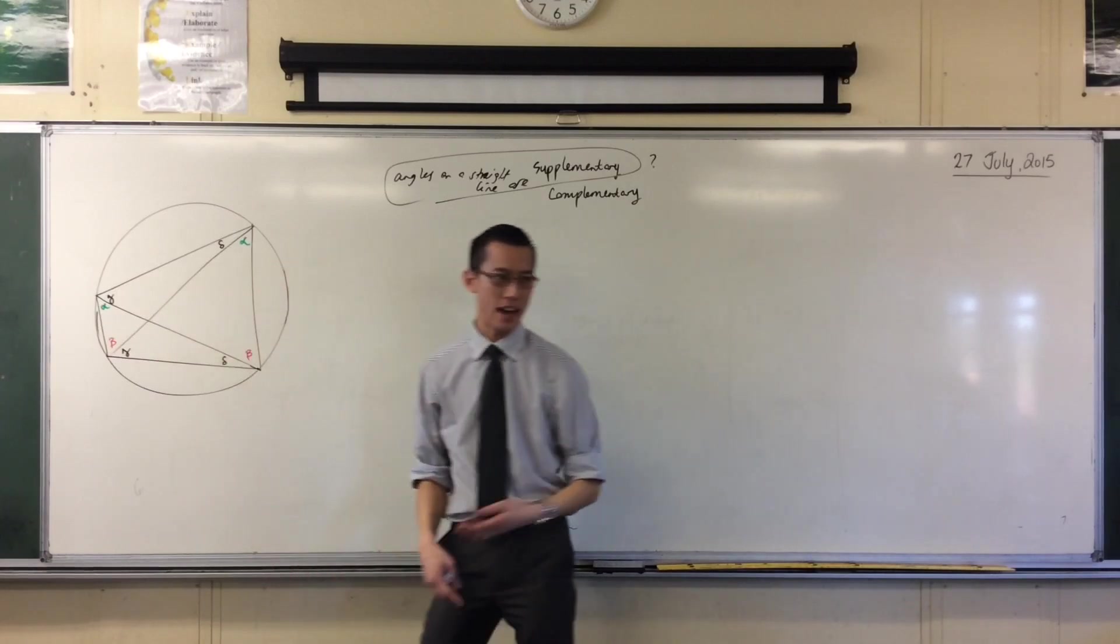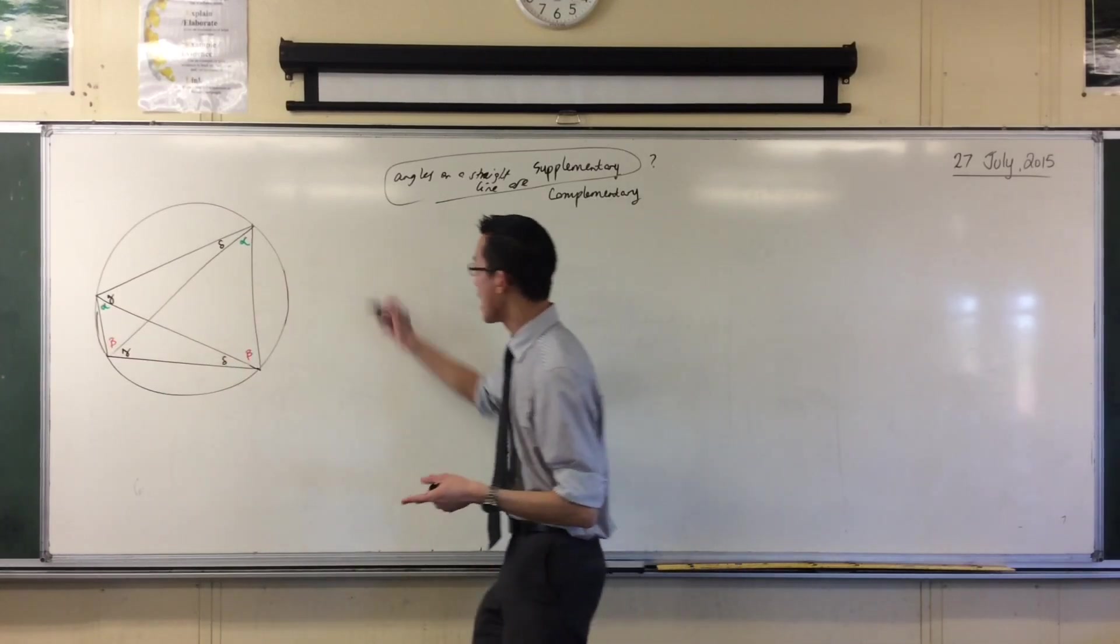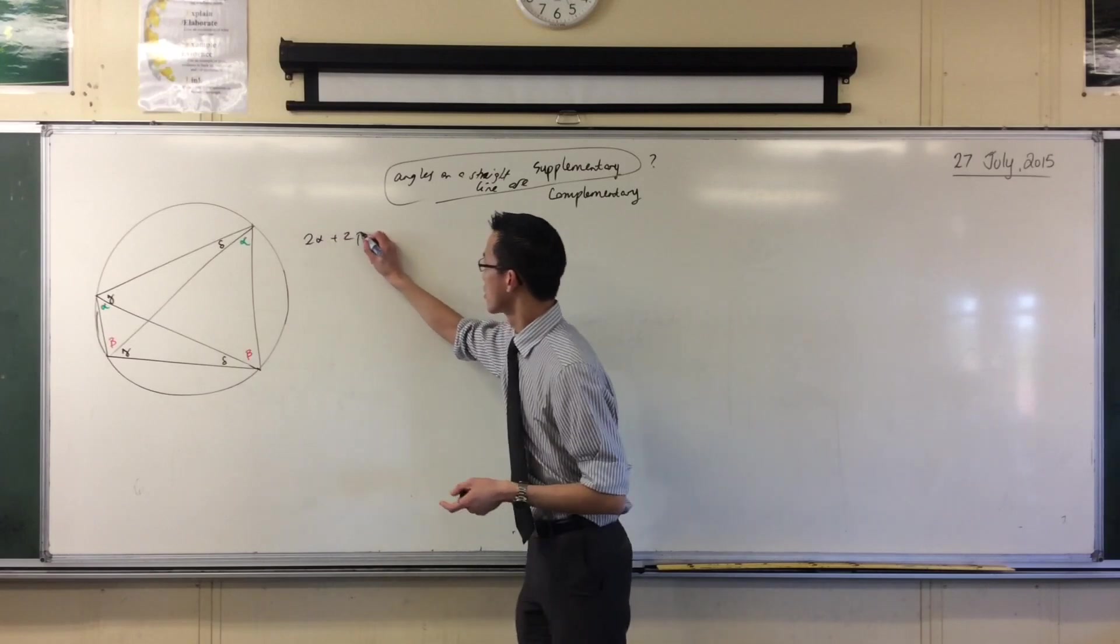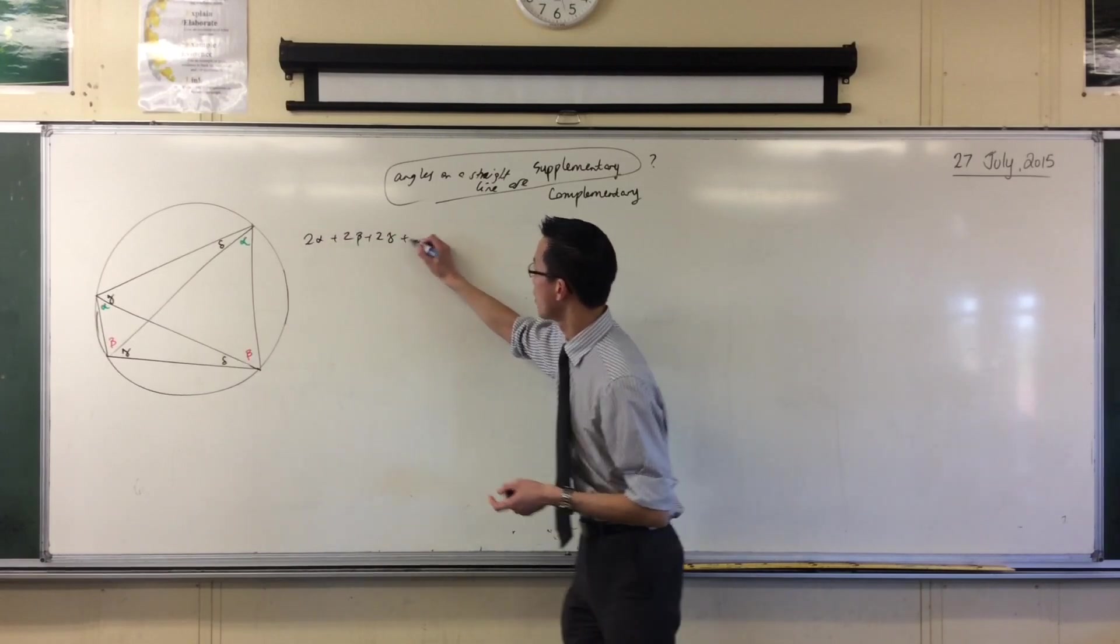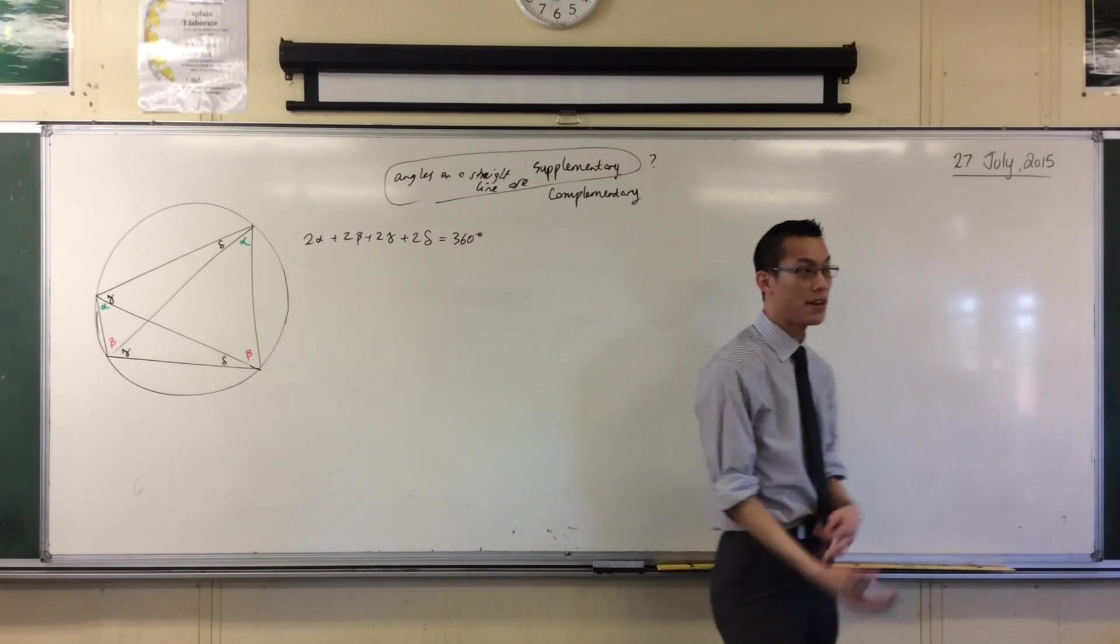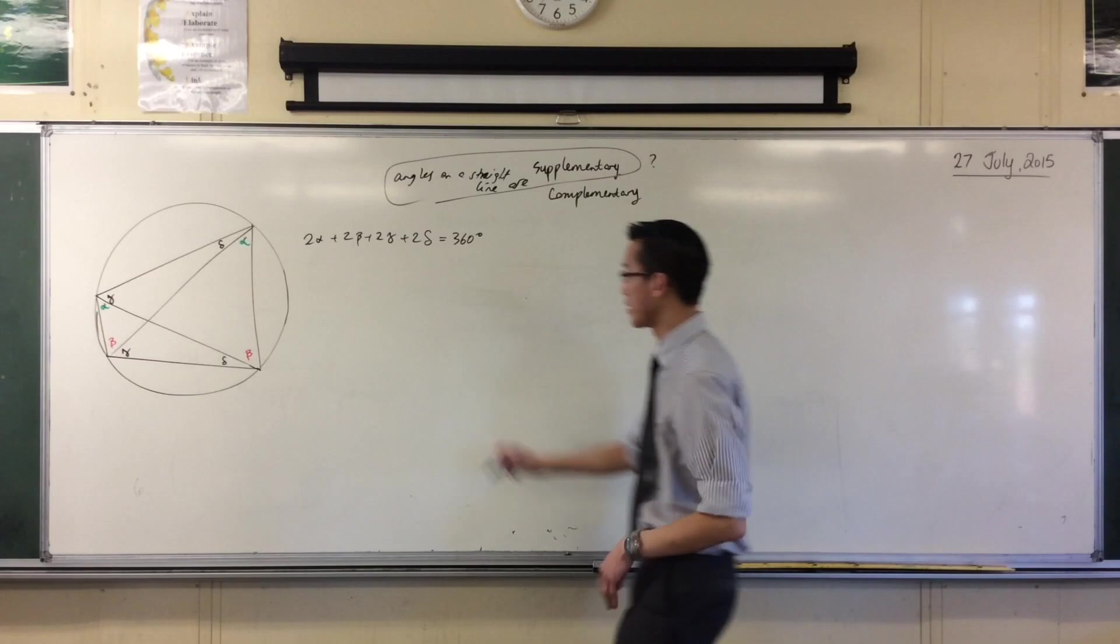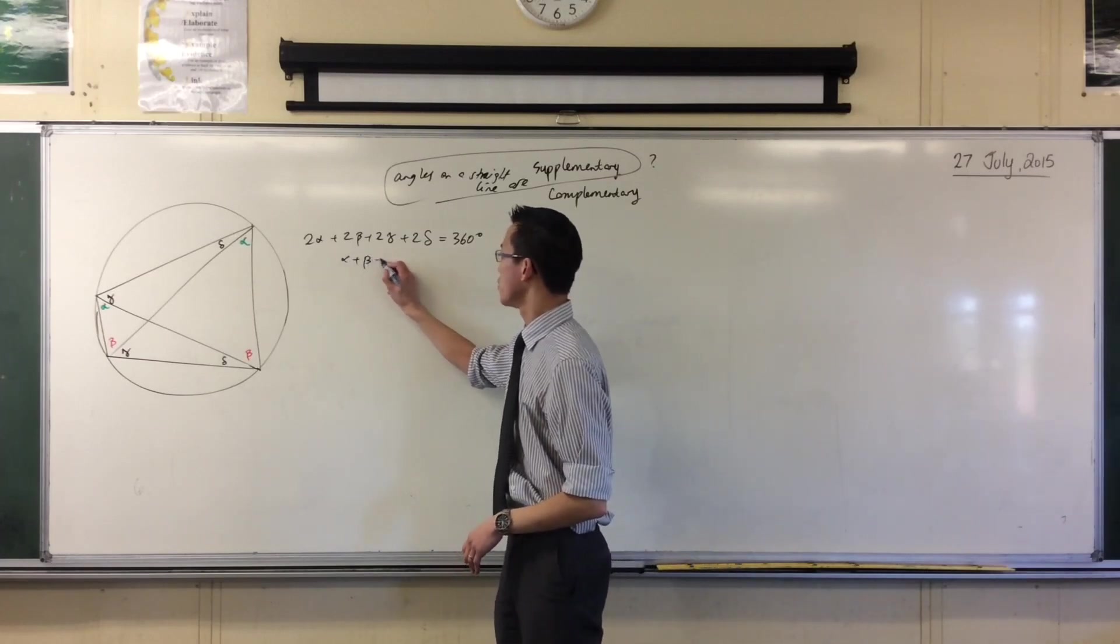Great. My eight angles add up to 360 degrees because they are the angle sum of the quadrilateral. So what I really have is 2 alpha plus 2 beta plus 2 gamma plus 2 delta equals a full revolution. And all you need to do, just like with the angle in the semicircle, is divide the whole thing. Have it all, which gives you this.